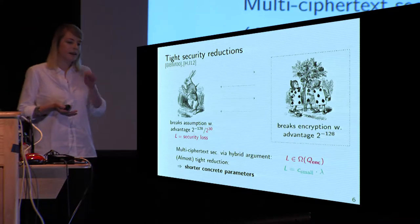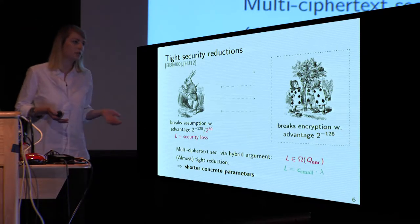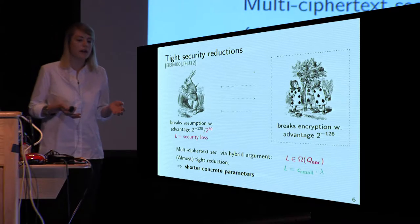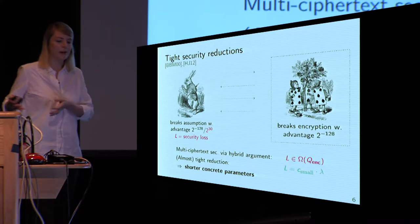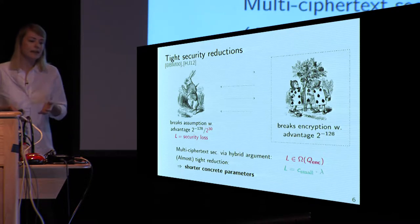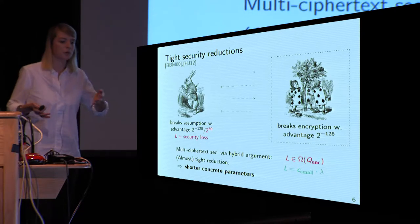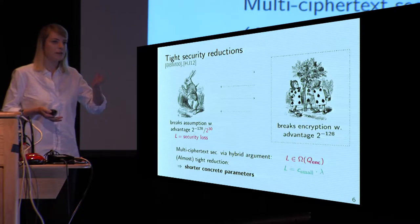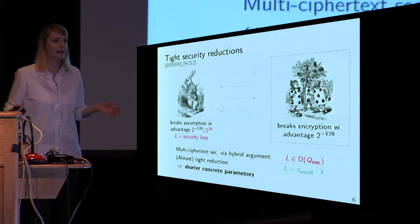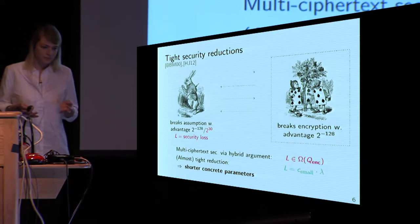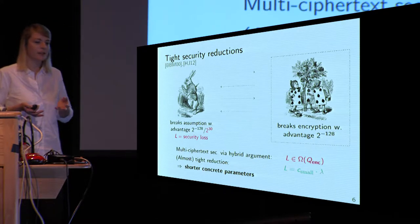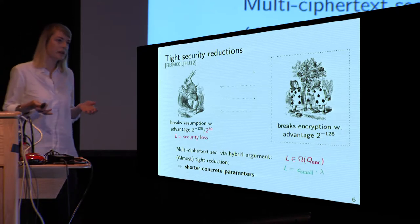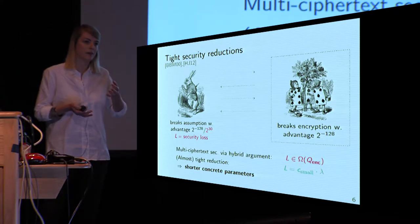So the loss will be omega of the number of encryption queries. If we want 128-bit security, we have to take a security parameter of 158 for the underlying assumption. What we call a tight reduction — often referred to as almost tight — should be linear in the security parameter, some small constant times the security parameter, because then the loss will not be 2^30 but something in the order of 2^8, 2^9, 2^10, significantly smaller. This yields shorter concrete parameters, which is why we care about tight security reductions for concrete efficiency.